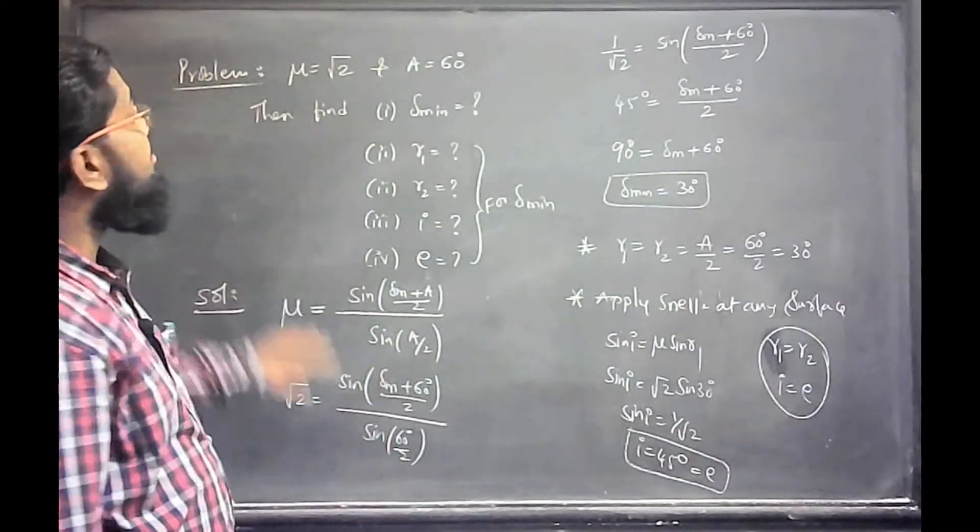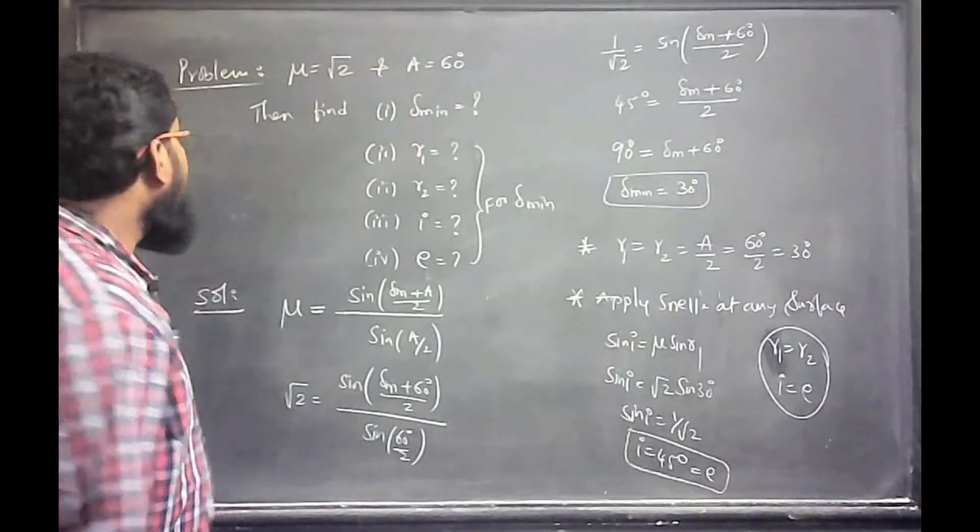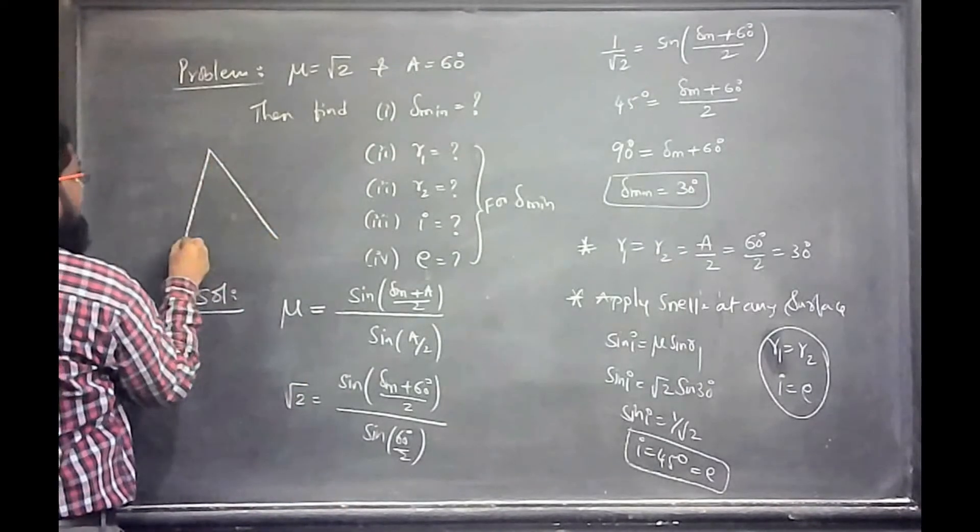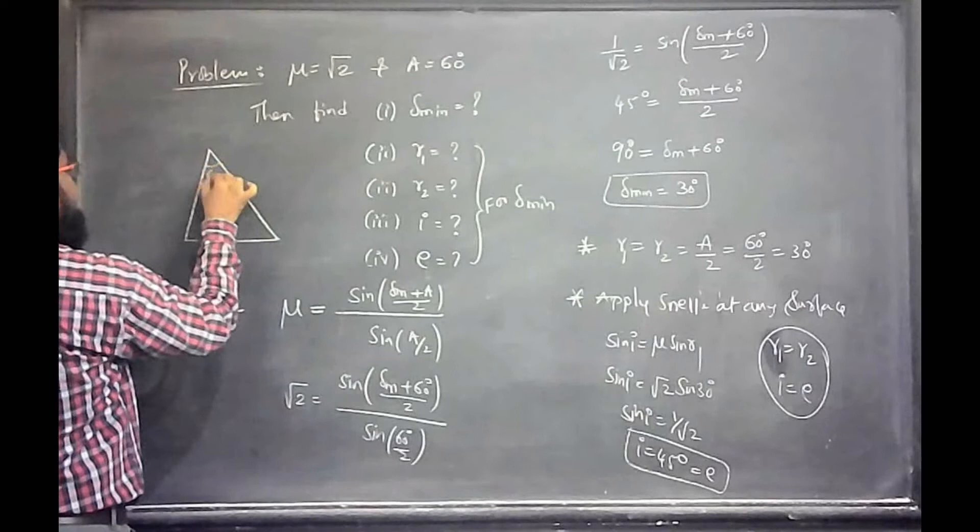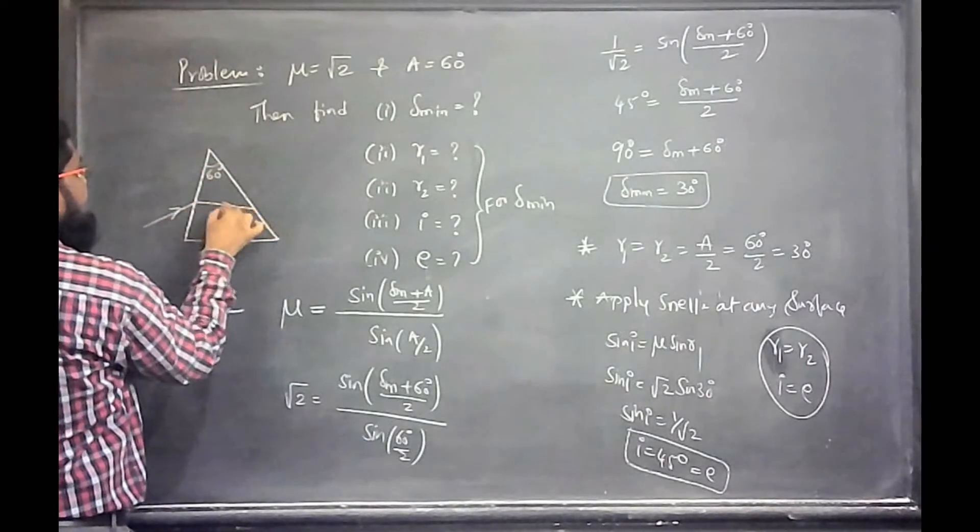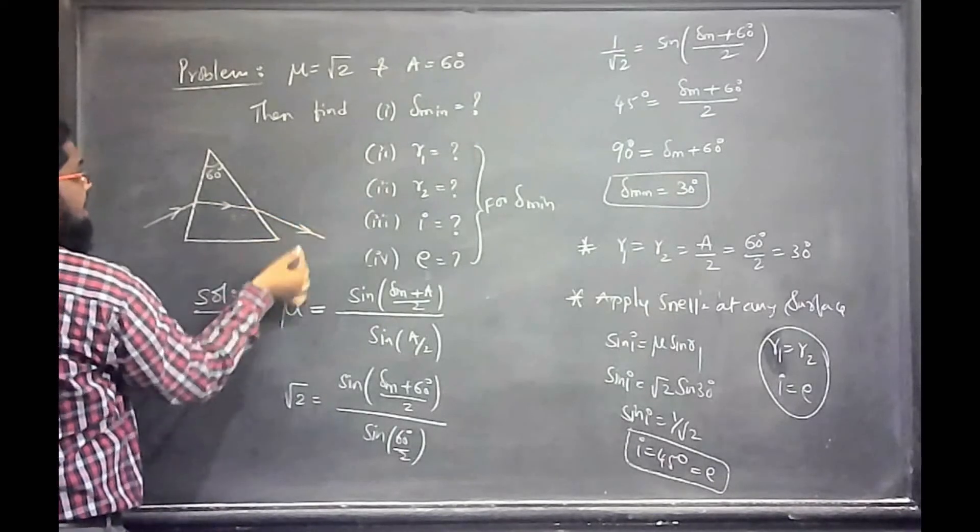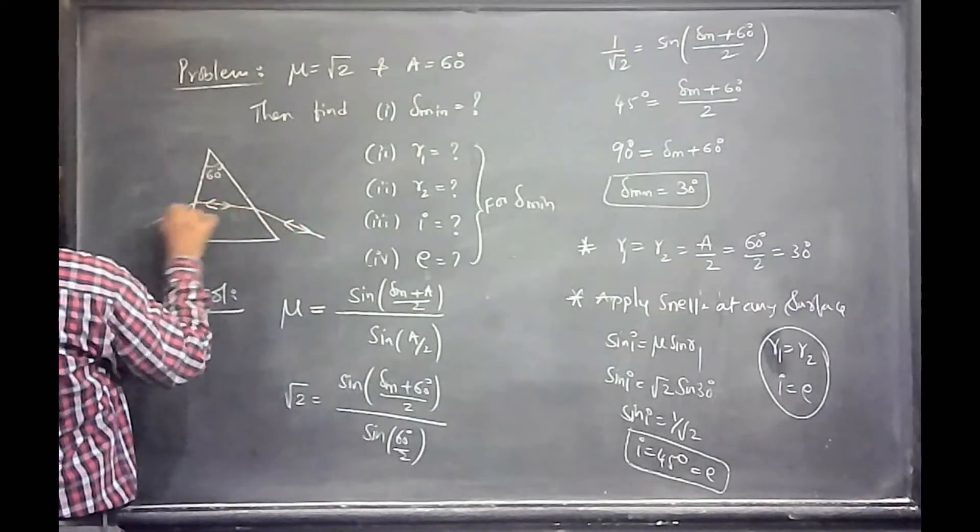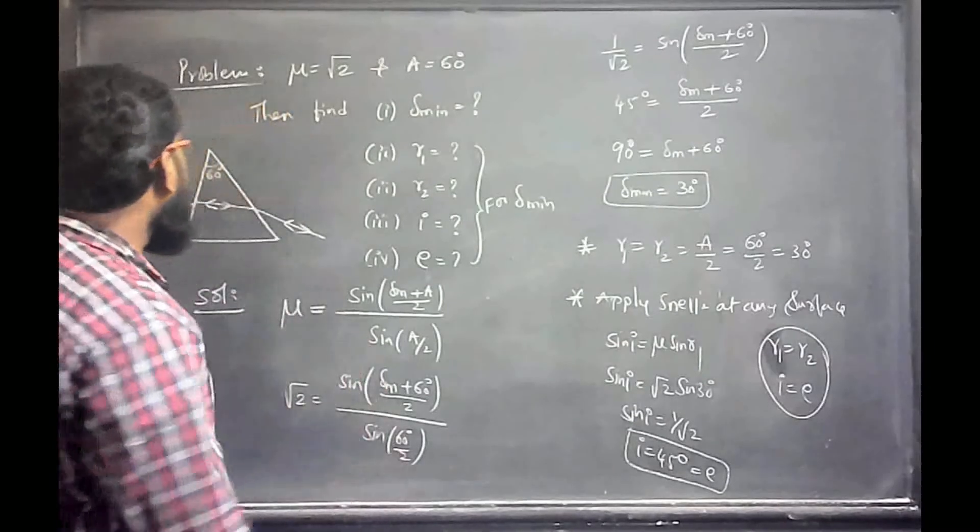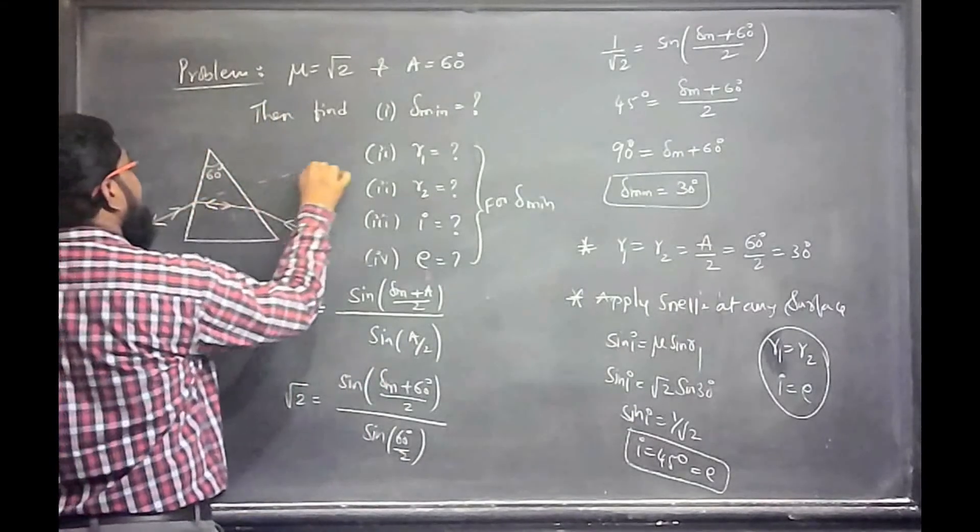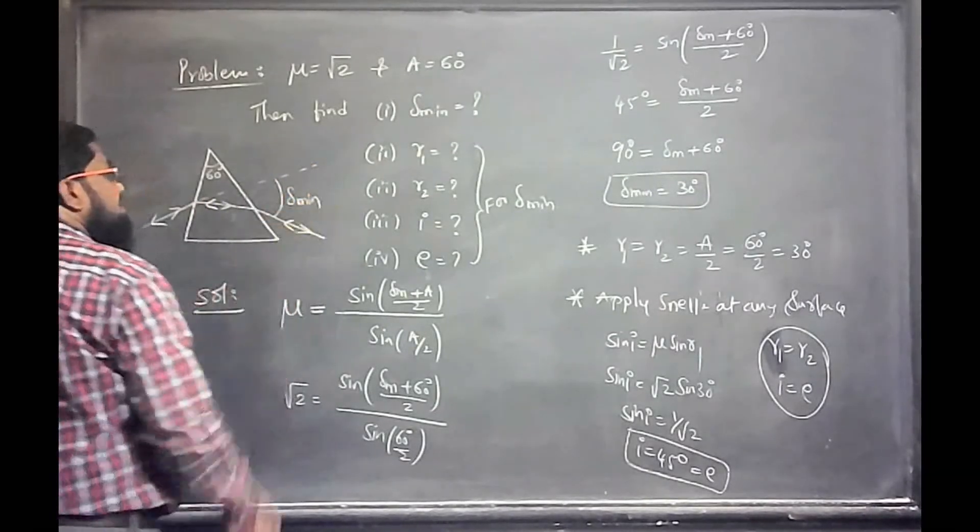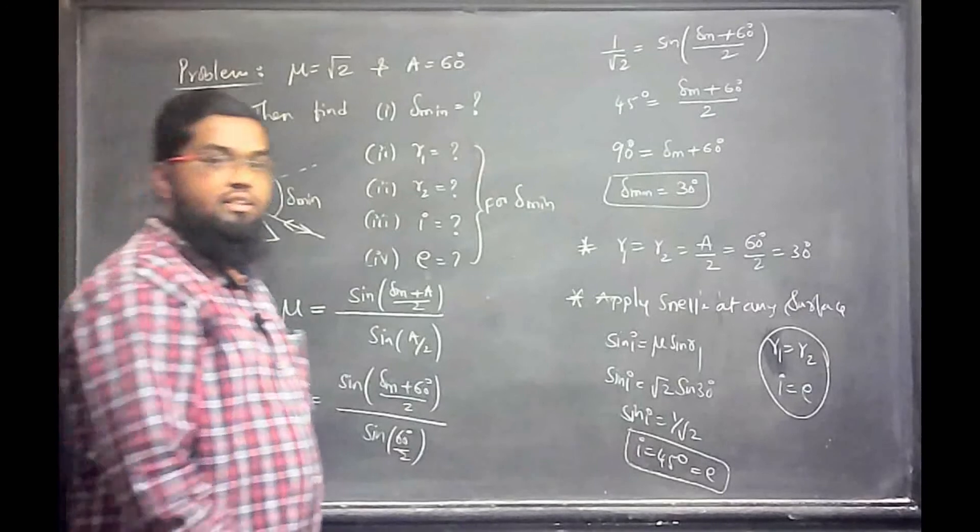This problem will illustrate the complete structure. We do not know what type of prism it is, it is given only 60 degrees. A ray of light is incident and passes symmetrically for minimum deviation. This is the ray incident and this is the minimum deviation.